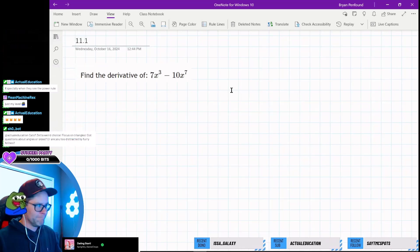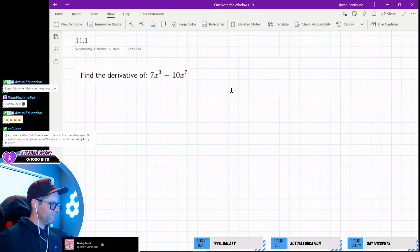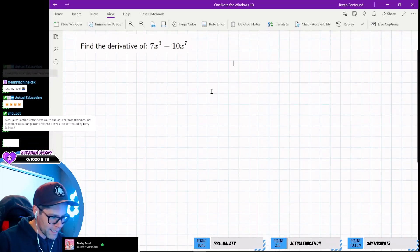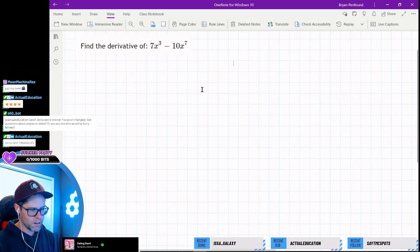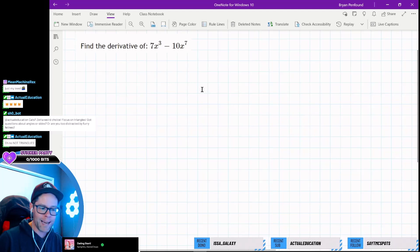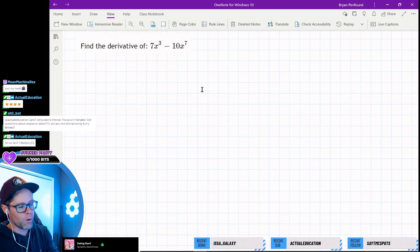Focus on triangles. Got questions about angles or sides? Or are you too distracted by furry felines? I am quite distracted by furry felines, I'm not gonna lie. Okay, let's take a look at some differentiation rules. We want to find the derivative of 7x cubed minus 10x to the power of 7.